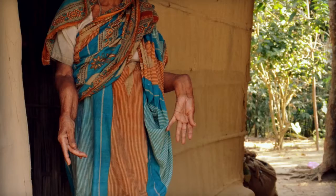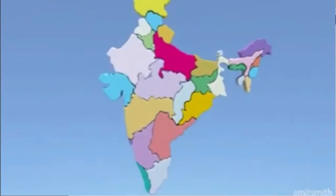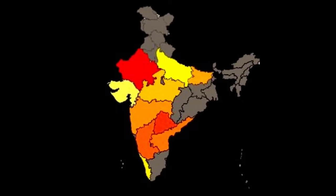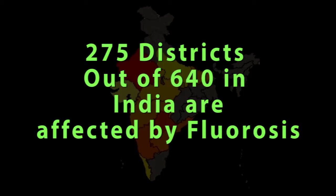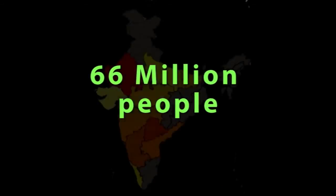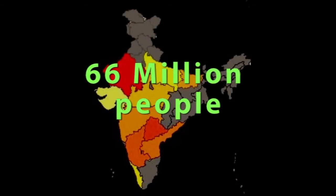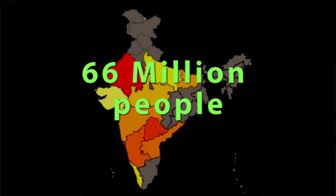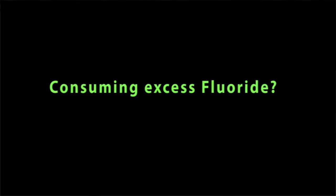But if you take excessive amounts of fluoride, it causes a disease called fluorosis, which is widely prevalent in our country. The latest data from the Government of India reveals that 275 districts out of 640 in the country are affected with fluorosis. There are 66 million people living in these areas who are at risk of contracting fluorosis, and 6 million people are crippled because of it.